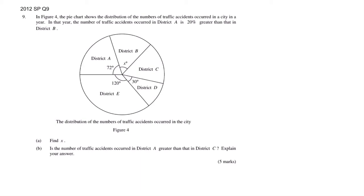District A is 20% greater than District B. Let's translate this line first. A is... is means equals... 20% greater than B. Do you know anything about A or B? Yes, for A the angle is 72, and for B it is x.